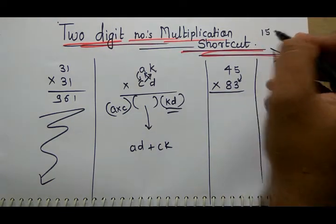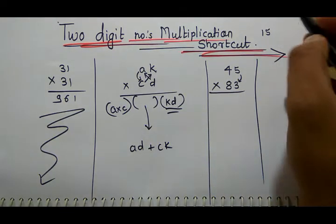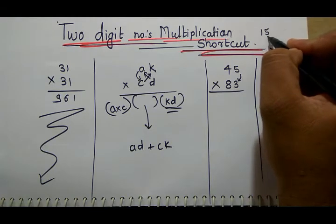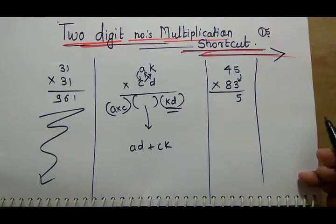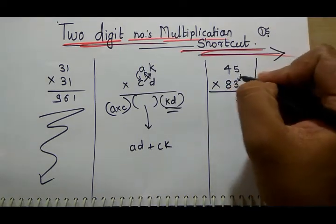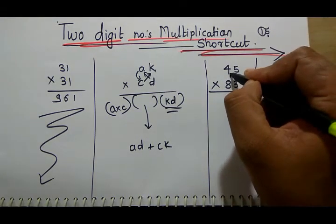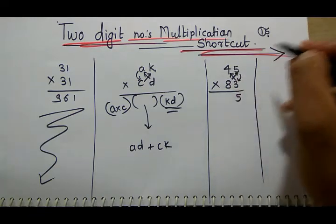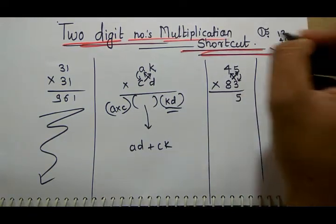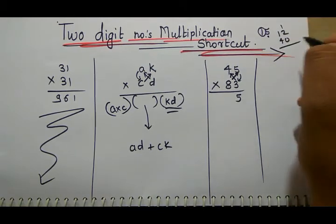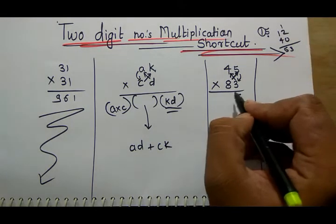15 is a two-digit number, right? So this is one place, that is unit place. We are going to write here and carry over here. Now criss-cross multiply, and the answer is 53.